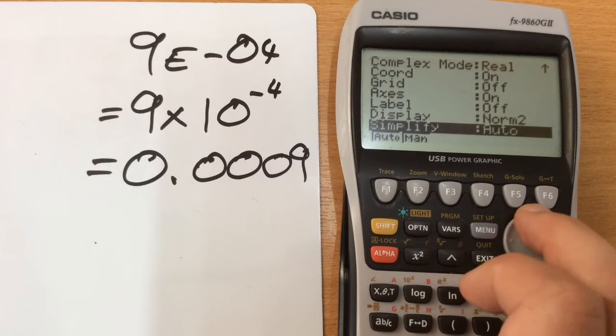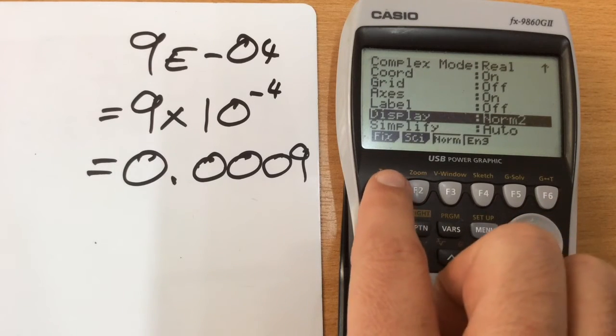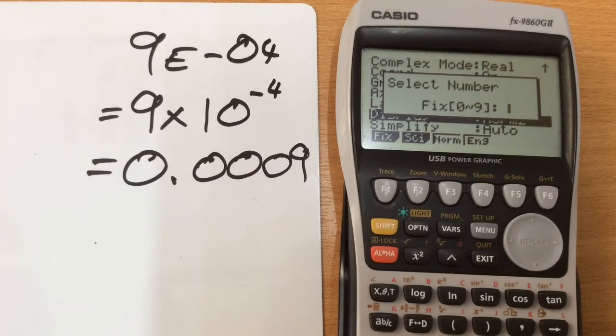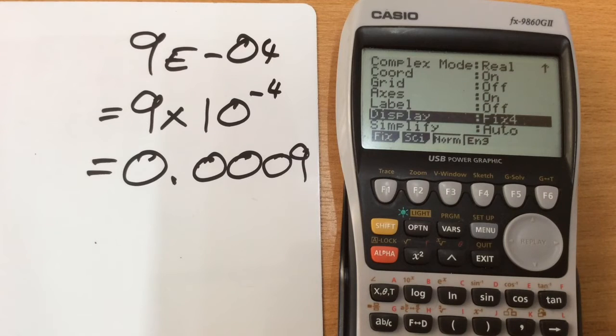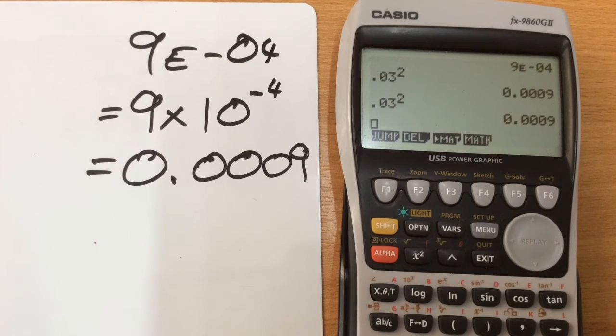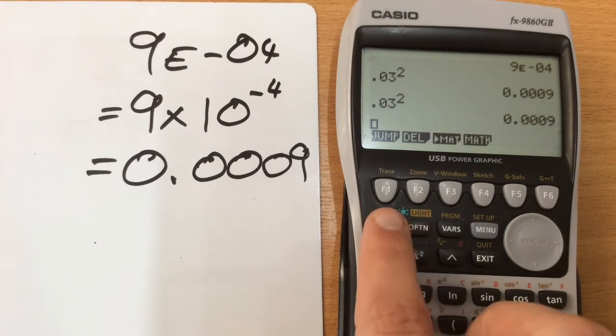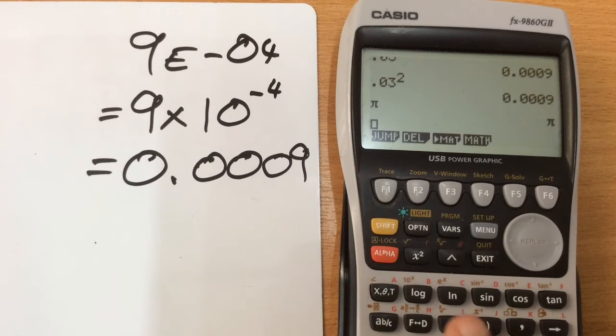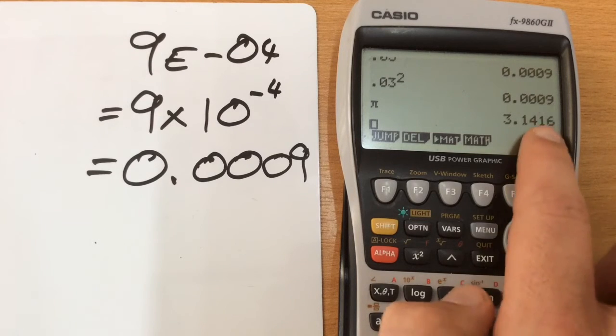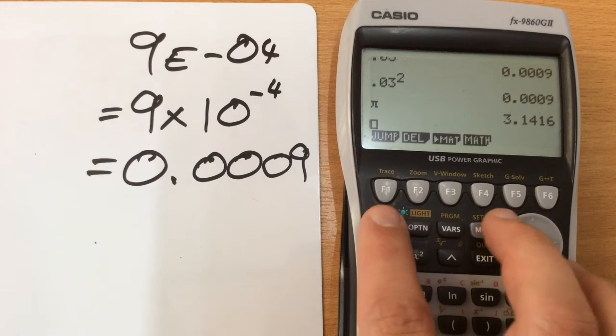The other modes though do some other interesting things. So if we go into fixed mode, fixed actually tells us the number of decimal places that we'll allow. So we might specify something like four decimal places, so it comes up with fixed four. If we type something in like pi, press the F to D button at the bottom, then it will show us pi to four decimal places and of course it's rounding as appropriate.